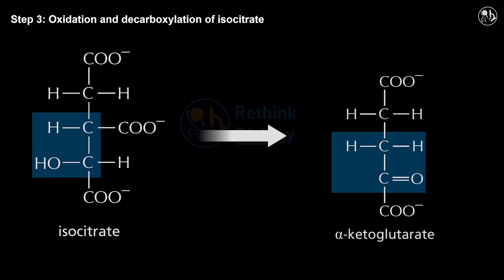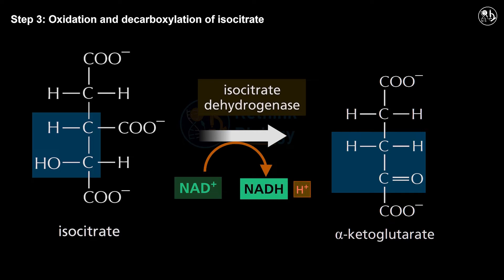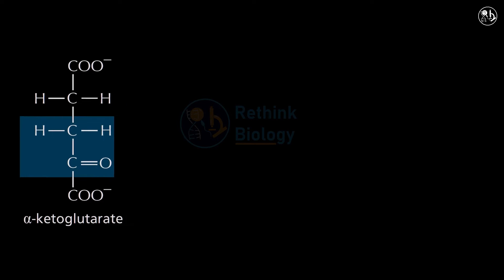Step 3: Oxidation and decarboxylation of isocitrate. In this step, isocitrate is oxidized and decarboxylated to form alpha-ketoglutarate. This reaction is catalyzed by the enzyme isocitrate dehydrogenase and transfers electrons to NAD⁺ to form NADH and H⁺. One molecule of carbon dioxide is released by this process.